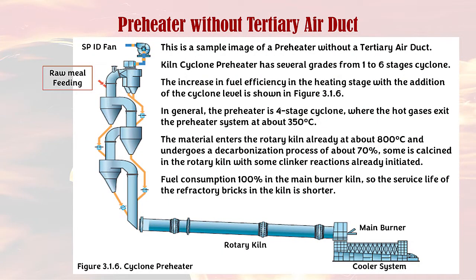This is a sample image of a preheater without a tertiary air duct. The kiln cyclone preheater has several grades from 1 to 6 stages cyclone. The increase in fuel efficiency with the addition of cyclone levels is shown in figure 3.1.6. In general, the preheater is a four-stage cyclone, where the hot gases exit the preheater system at about 350 degrees Celsius. The material enters the rotary kiln already at about 800 degrees Celsius and undergoes a decarbonization process of about 30 percent.